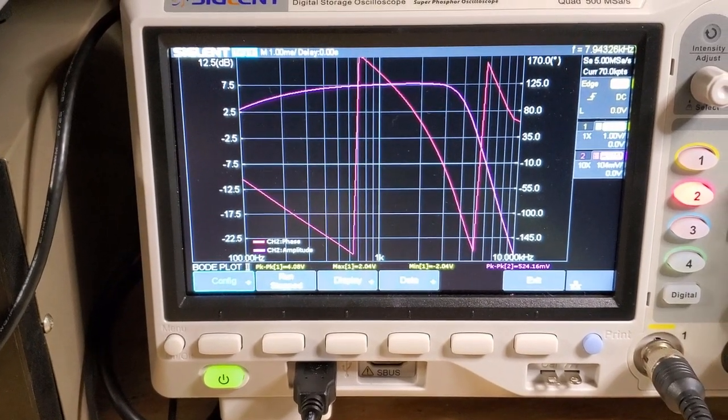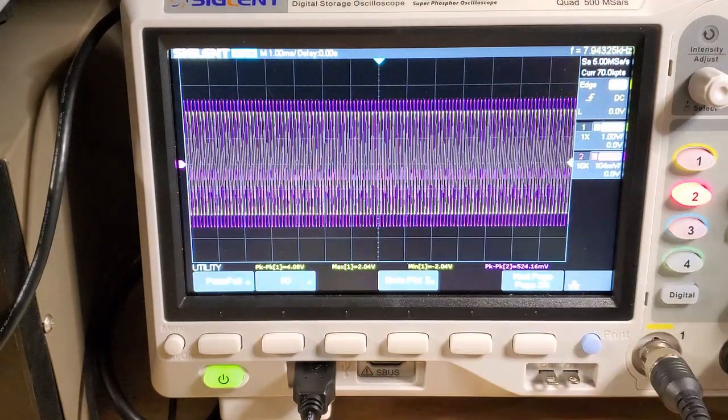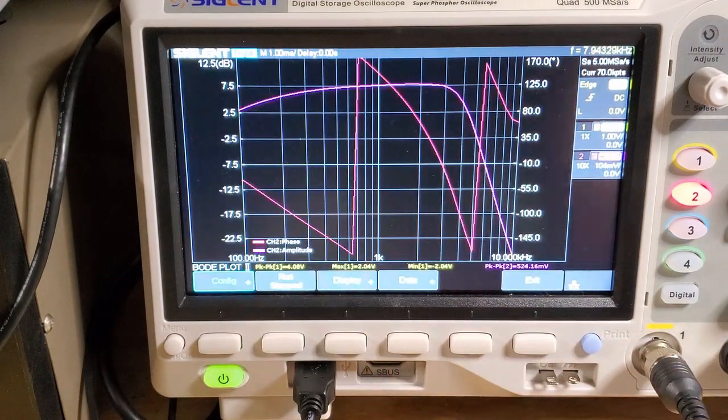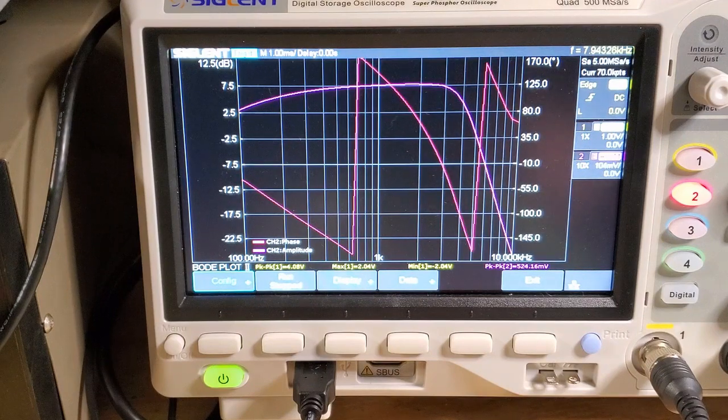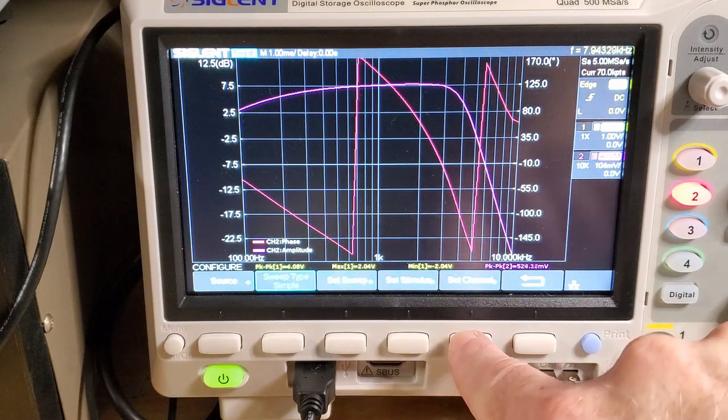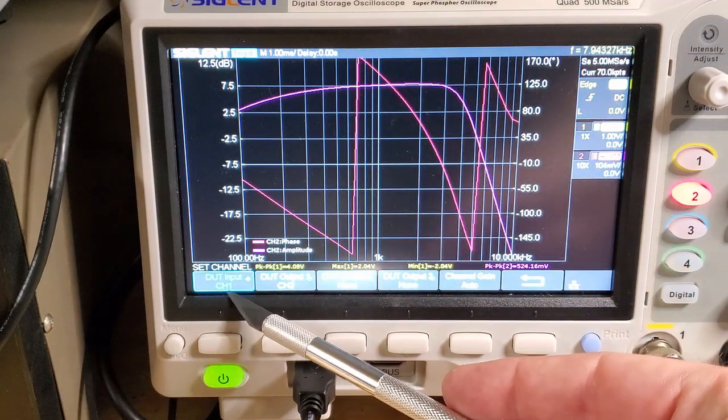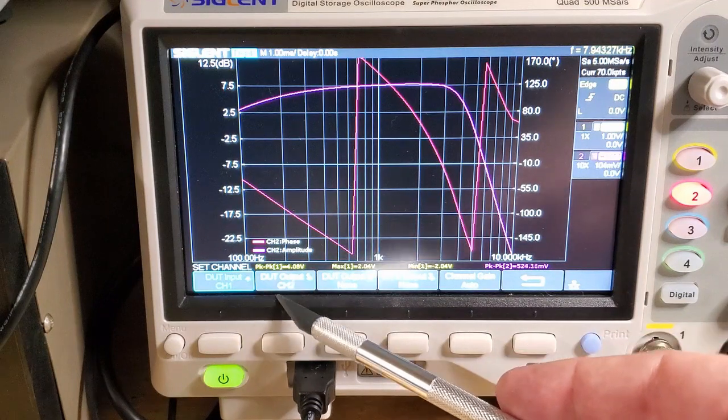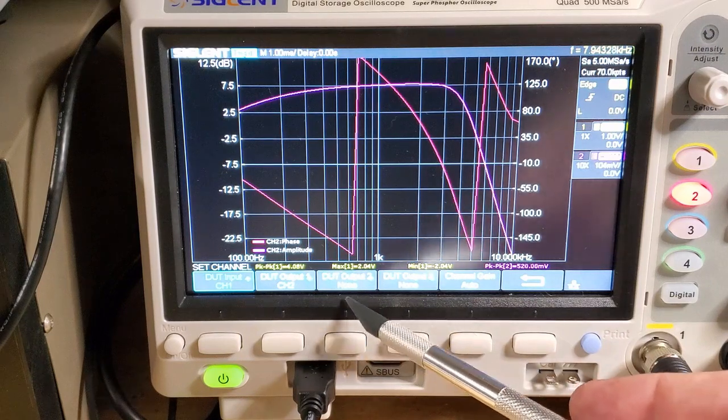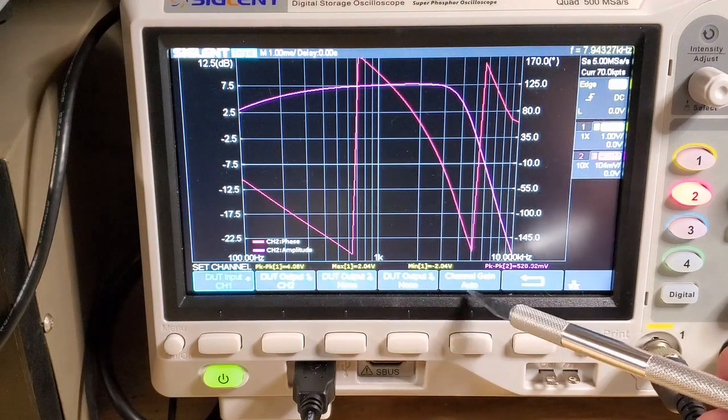In terms of the scope setup itself, the Bode plot menu appears on Utility. If you click on Utility, you'll see it's on page 2, Bode plot. Then there's a number of things that you need to configure, so you go into the Config menu. First thing you want to configure is your channels. You can see here I have Device Under Test Input coming into channel 1, Device Under Test Output going to channel 2 of the scope. This is a four-channel scope, you can have multiple output channels, but I'm just using channel 1 and channel 2. Then finally, Channel Gain set to Auto.